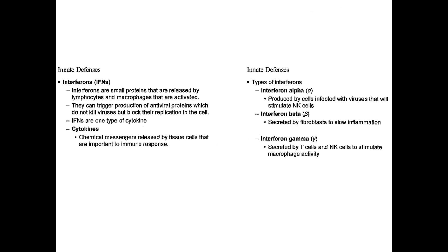Welcome back for part three of The Immune System, where we are going to finish up with the innate defenses and then begin on the active ones. The innate defenses we have left to talk about are the interferons, which are small proteins released by lymphocytes and macrophages. Once activated, they can trigger production of antiviral proteins, which don't actually kill viruses but will block them from replicating in the cell, slowing down the spread.